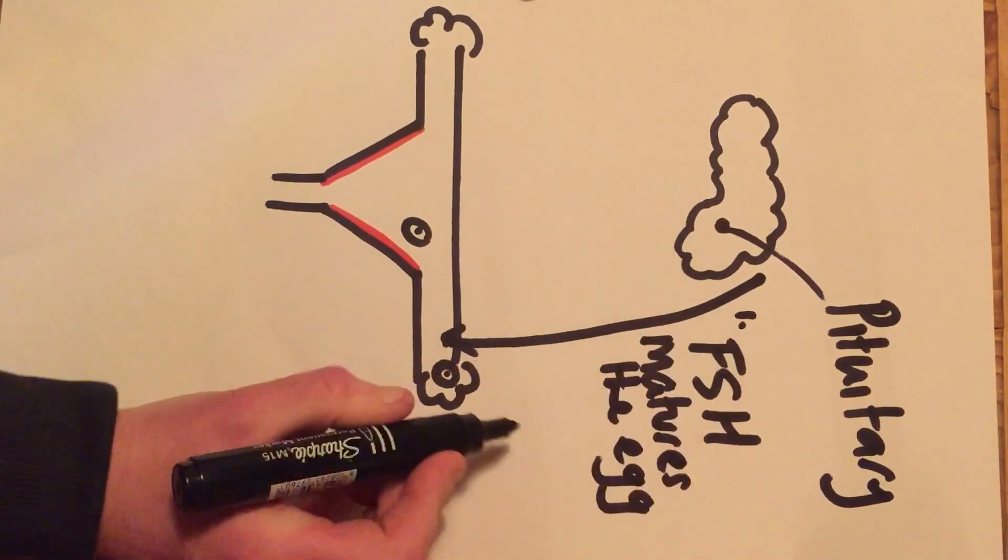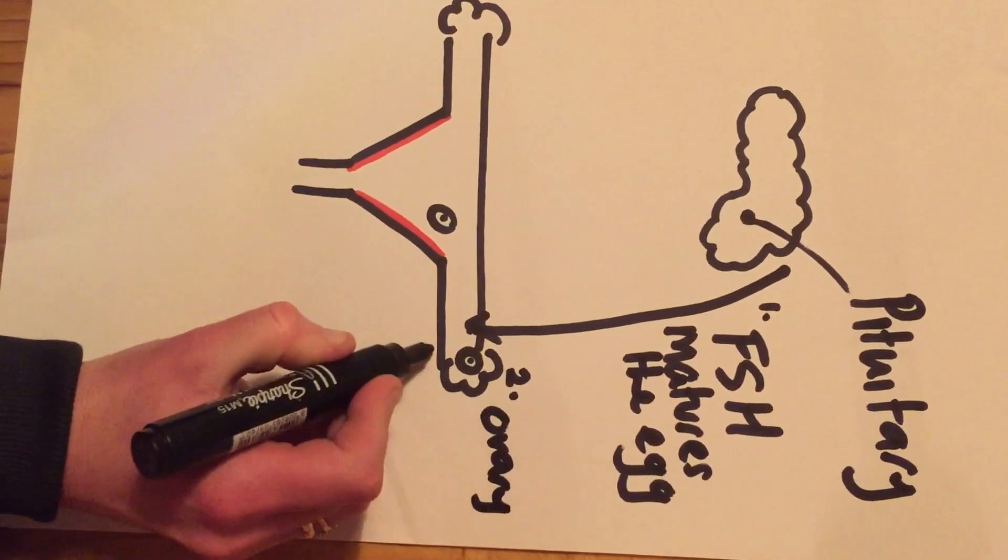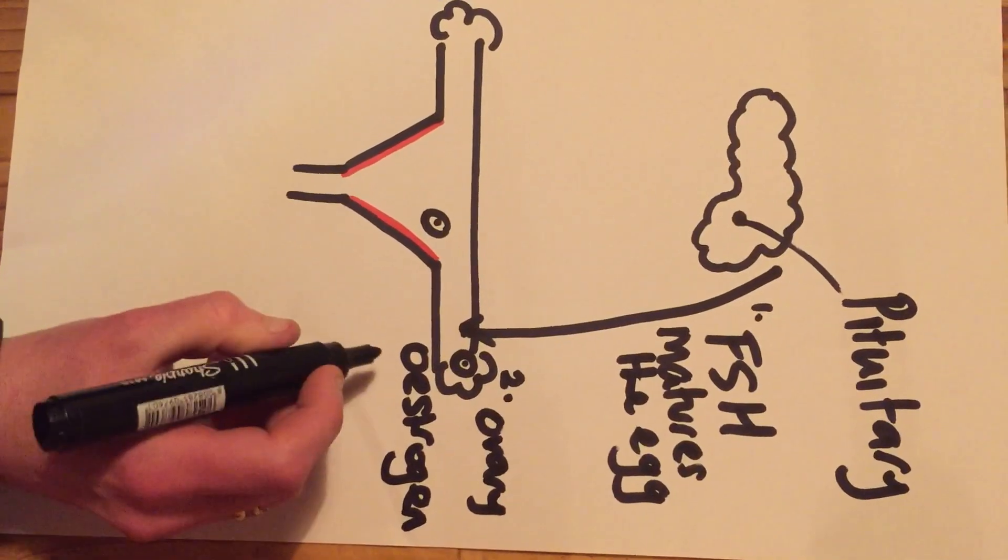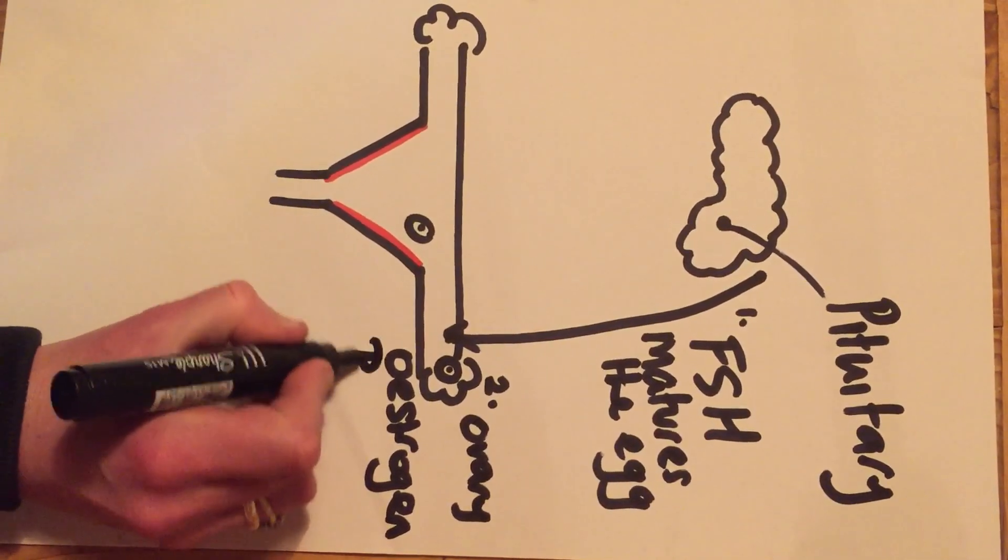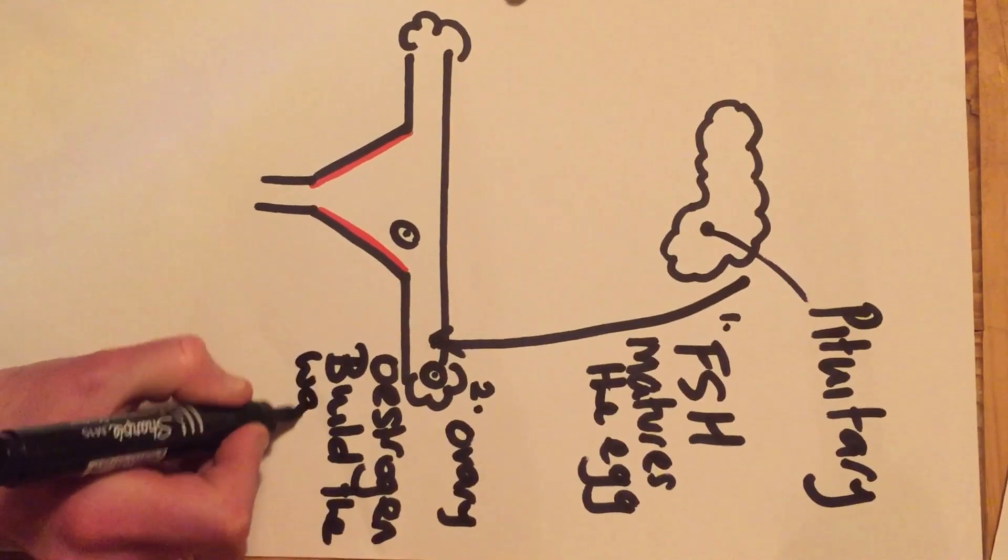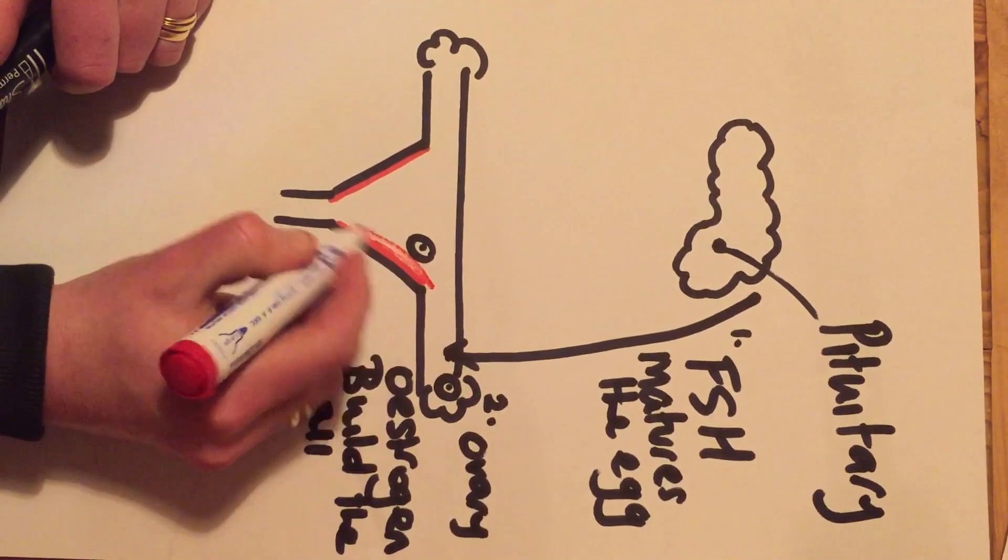Then the next step is number two, O for ovary and O for oestrogen. So we're going to get the levels of oestrogen going up, and what that's going to do is it's going to build the wall of the uterus lining. So I'm going to make that a little bit thicker.